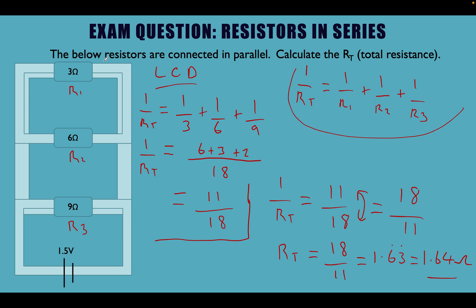Let's recap. We had the question: resistors connected in parallel — calculate the total resistance. We wrote out our formula for resistors in parallel. This time we used the lowest common denominator method — the lowest number that all three denominators divide into. We wrote: 1 over Rt equals 1 over 3 plus 1 over 6 plus 1 over 9.